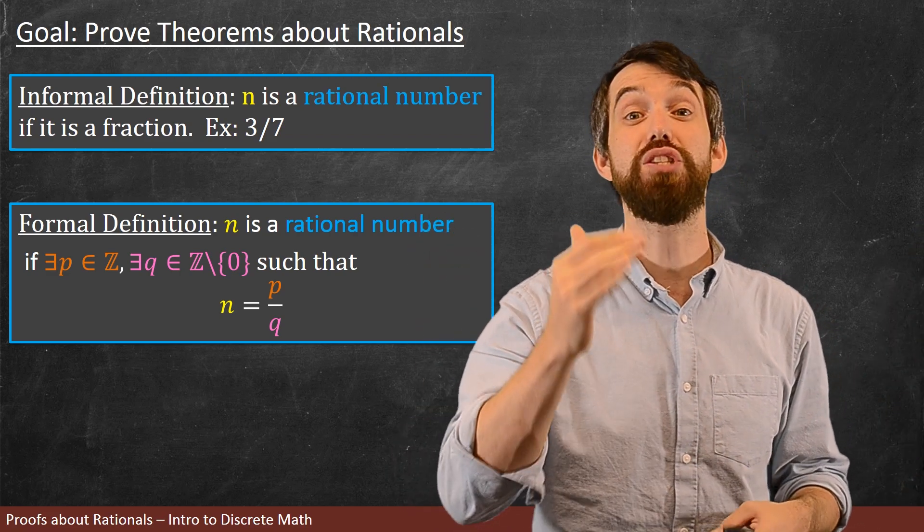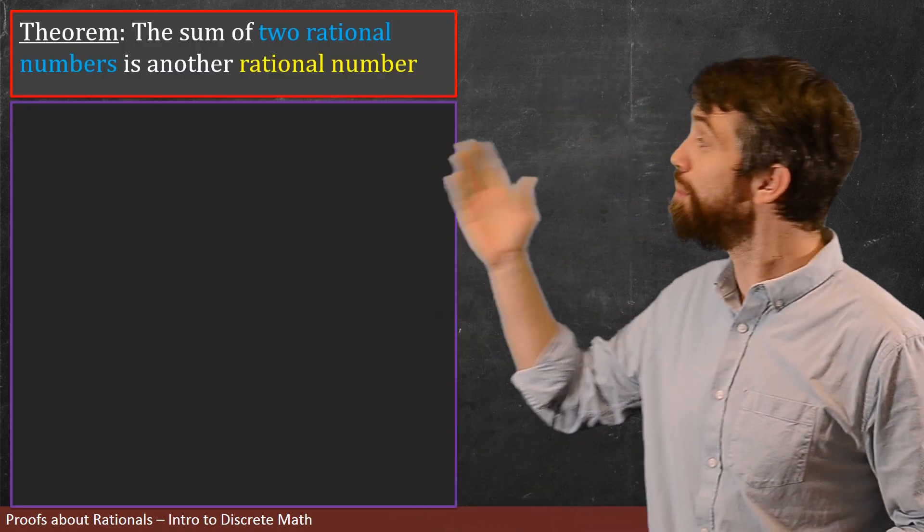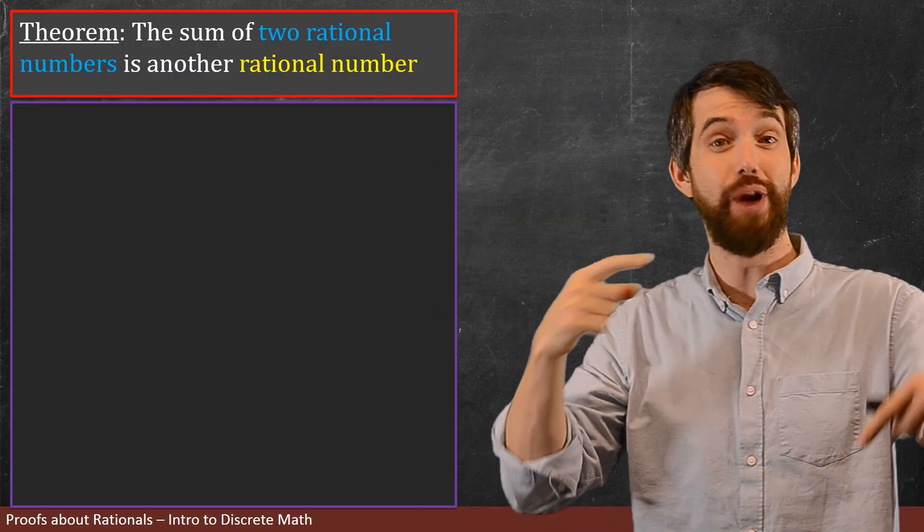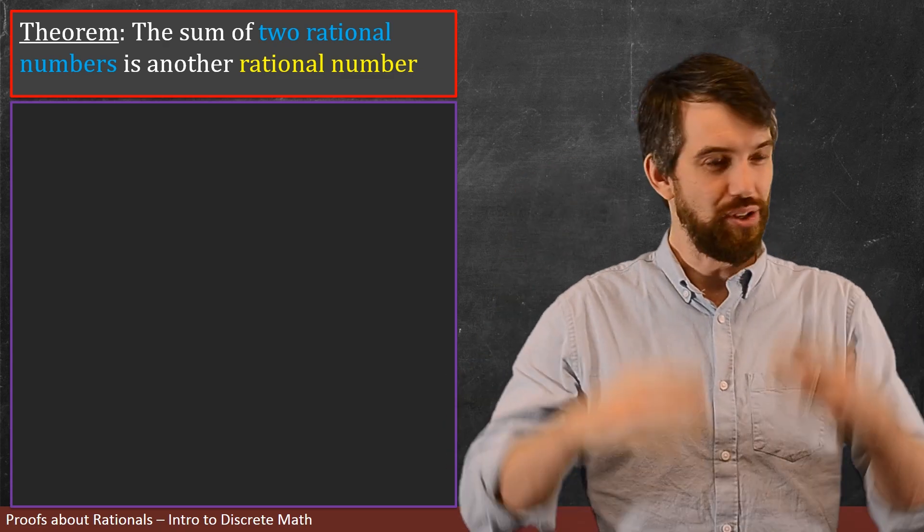Okay, so now let's go and make a formal proof about this. The proof I'm going to prove today is that the sum of two rational numbers, the sum of two fractions, is another fraction. Okay, so how do we do this?